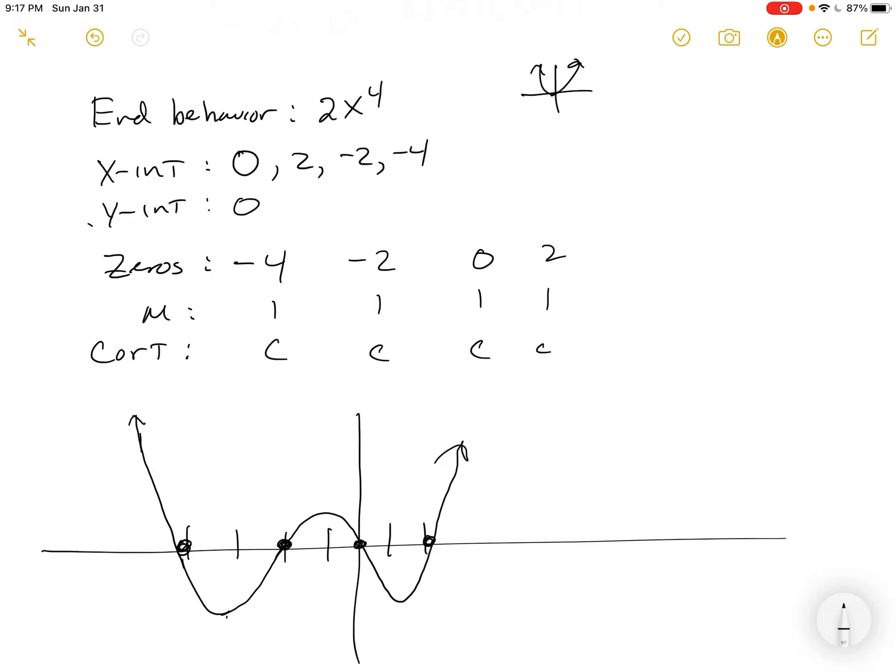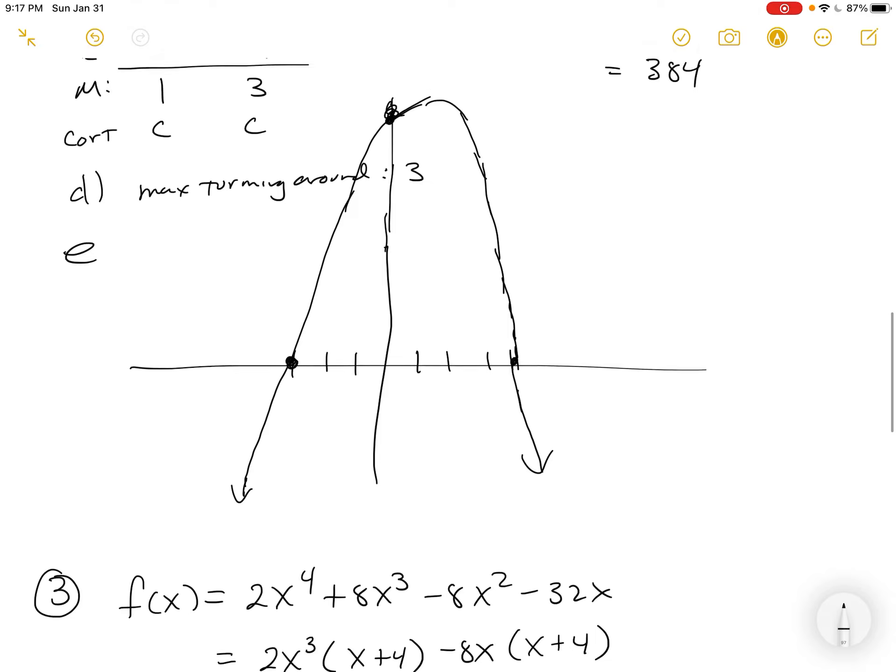That's calculus. All we're looking for is a rough sketch of this w-looking function. How many turnaround points does it have? 1, 2, 3. The maximum it could have had. You don't always achieve the max.